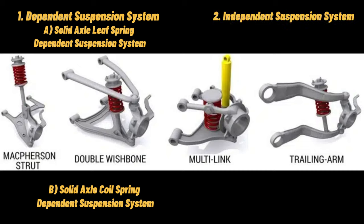2. Independent Suspension System. As the name suggests, in independent rear suspension, each wheel on the axle independently moves vertically up and down under the action of the suspension. Many vehicles use independent rear suspension (IRS). The IRS has almost the same advantages as the independent front suspension, but the most important advantage is that it reduces the unsprung weight of the vehicle. On the other hand, it has a high initial cost and a high maintenance cost, and the components wear out easily. Independent suspension is mainly of three major types.